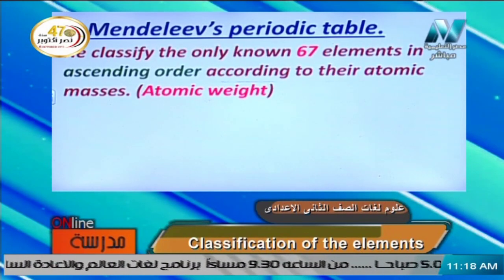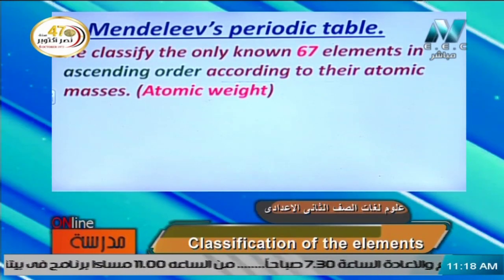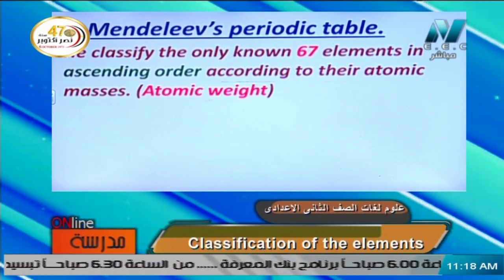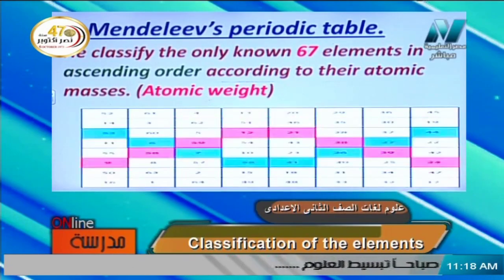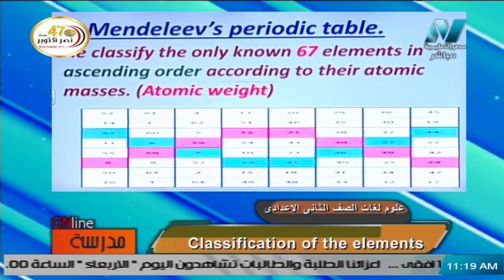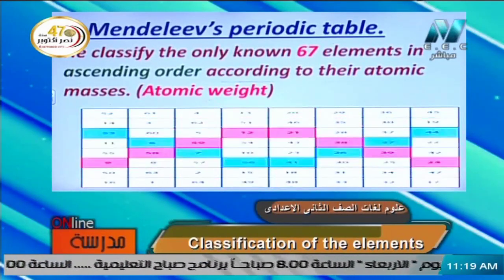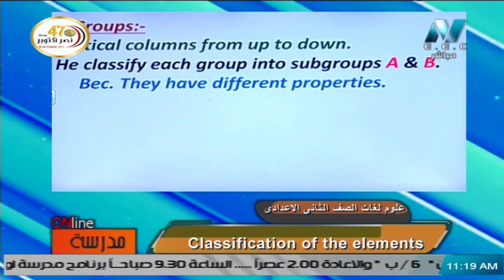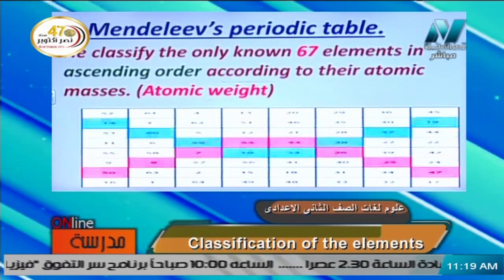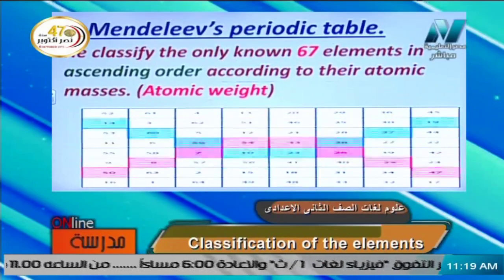Mendeleev classified only 67 known elements. We should remember the number of elements in Mendeleev's era. He arranged them in ascending order — from the smallest to the biggest — according to their atomic mass, which means atomic weight. In any table we have vertical columns from top to bottom, called groups. Mendeleev organized his table with groups as vertical columns.